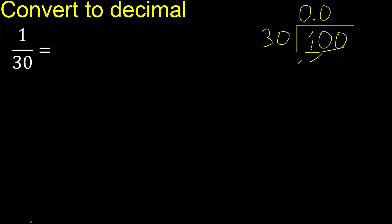100 is not less. Therefore, with 100, 30 multiplied by which number is nearest to 100 but not greater? 30 multiplied by 4 is greater. 30 multiplied by 3 is 90. 90 is not greater.